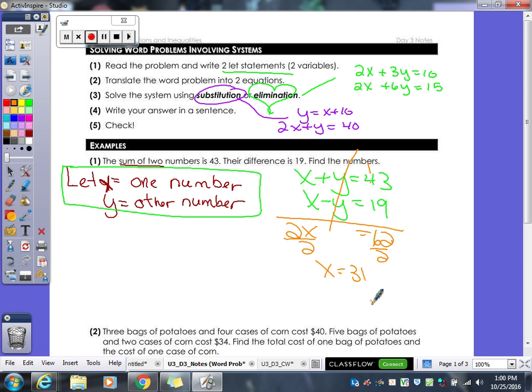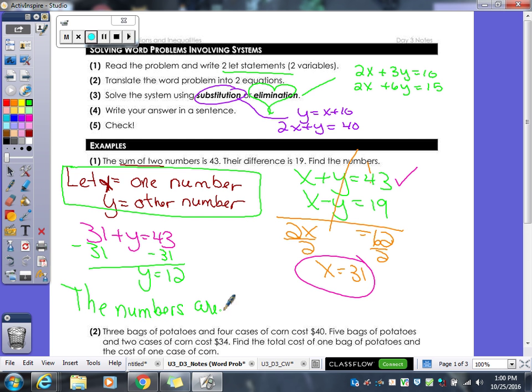We have to find the other number. So now I'm going to take that answer and I'm going to put a check mark next to this one. Mrs. Lorenzo always likes to pick the one that has no negatives in it. And I'm going to plug the 31 in for the letter x there. So 31 plus y equals 43 and then simply minus 31 from both sides and you get y equals 12. So you have to say the numbers are 12 and 31. That was an easy problem.